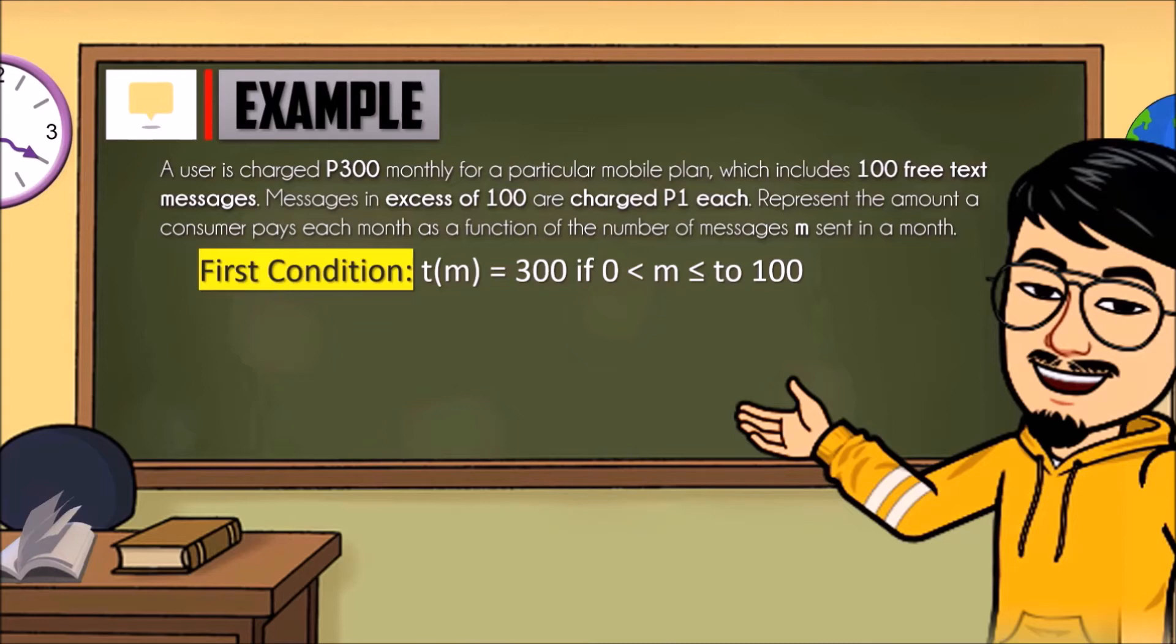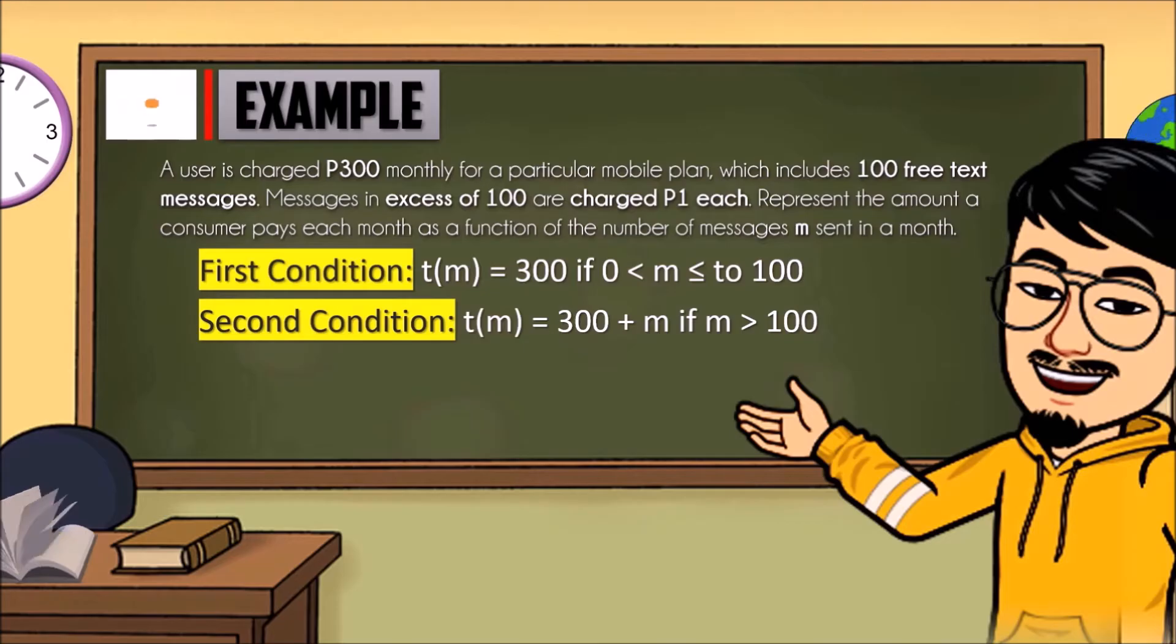Second condition: if more than 100 text messages are sent in a month, it will cost 1 peso per excess text message.